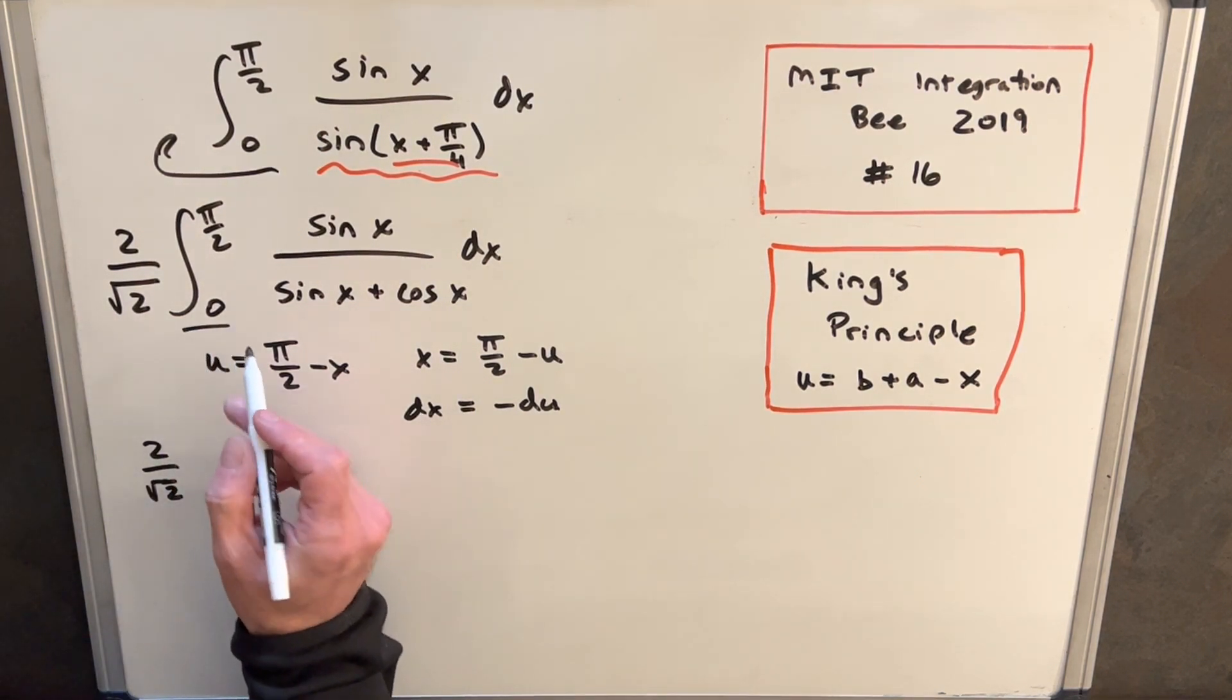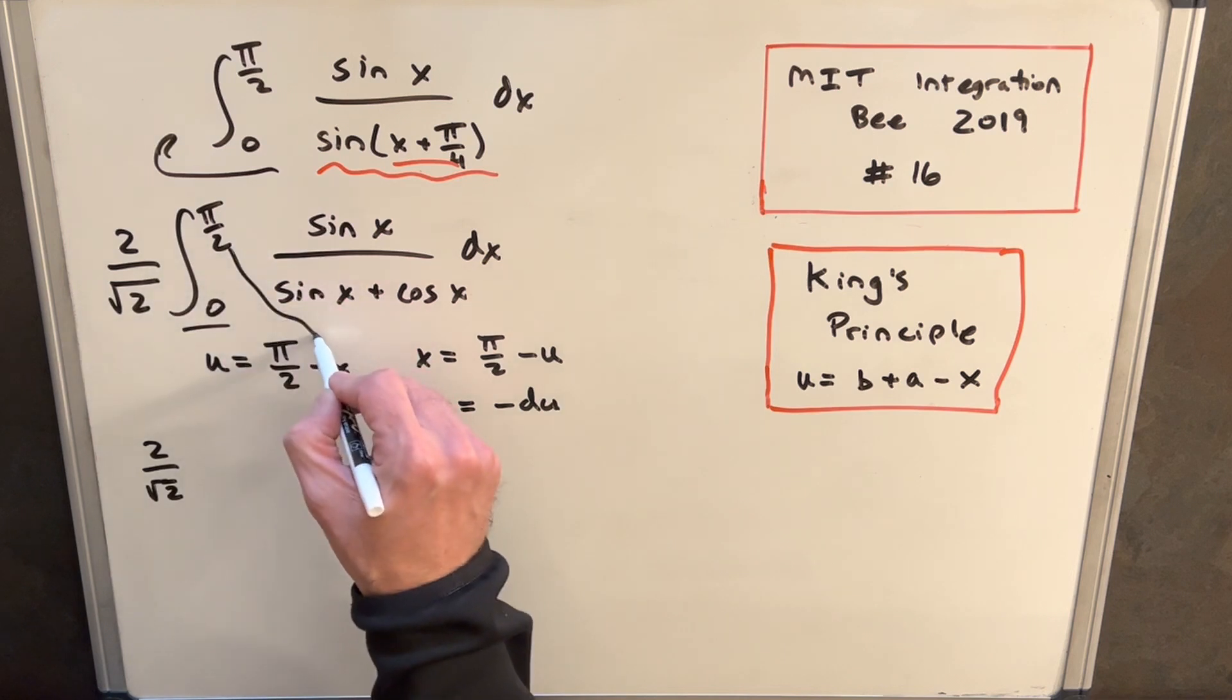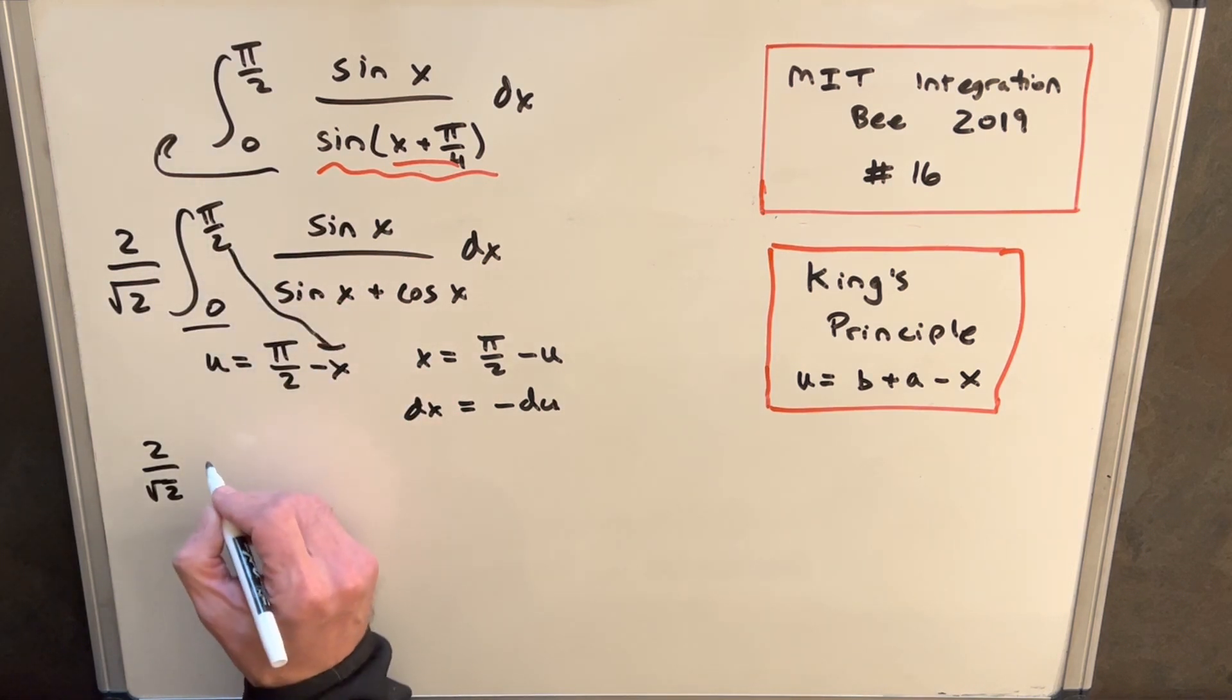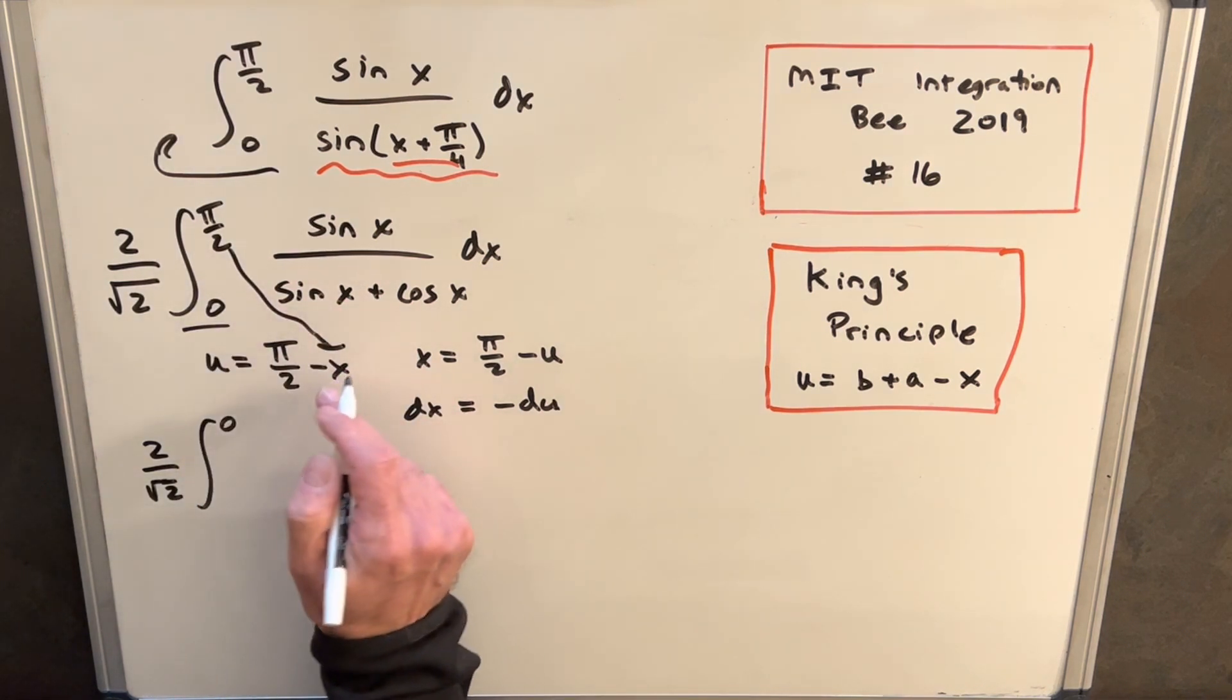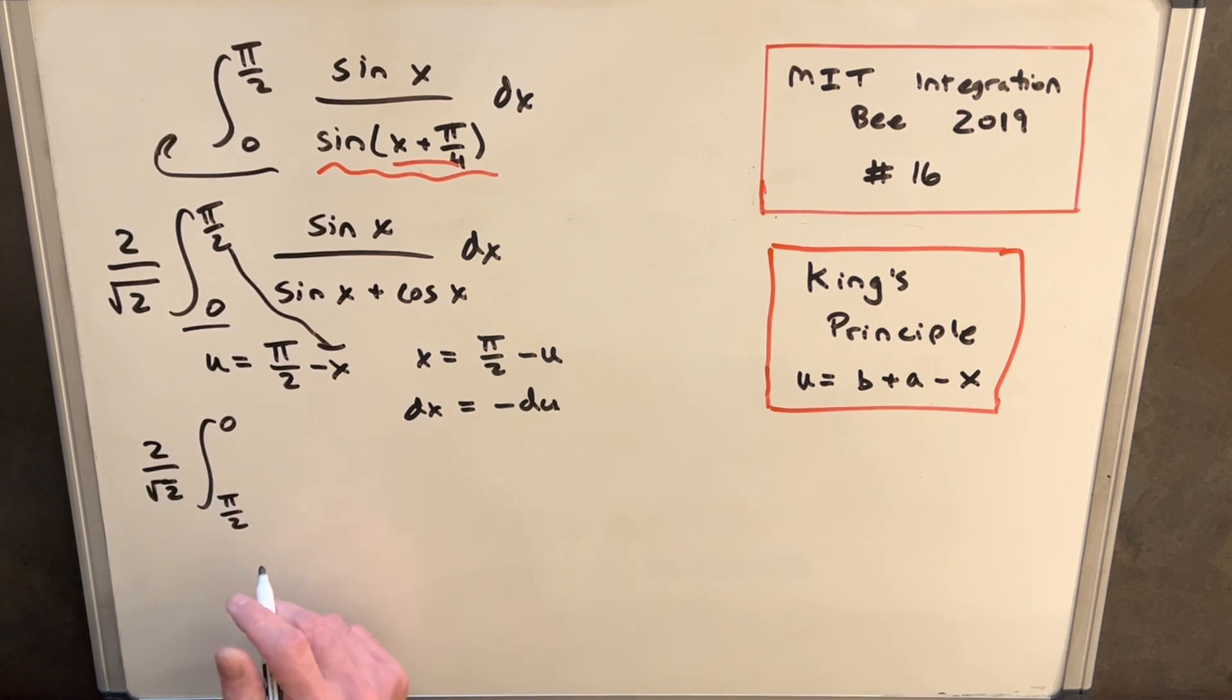First, let's update our boundaries on the integration. So if we plug our pi over 2 in here for x, u is going to be 0, and we plug a 0 in here, we're going to get pi over 2 back there.